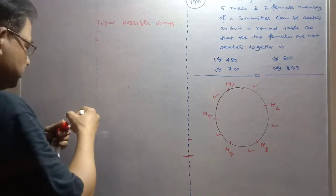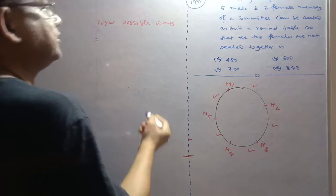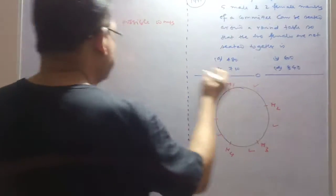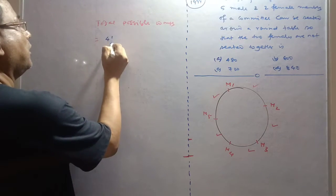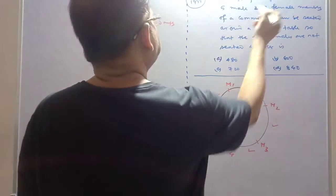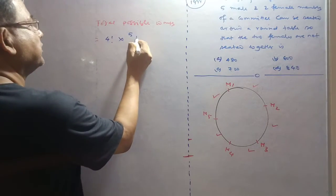will be: five men can be seated in a round table in 4 factorial ways. Five gaps, and in these five gaps two have to be filled. So that is 5P2.